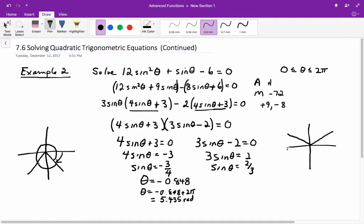The other angle over here, you could simply take the 0.848 and add it on to pi. So the other one is theta equals pi plus 0.848, which is going to be 3.99 approximately.